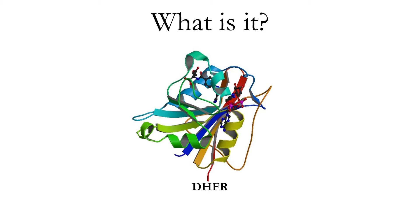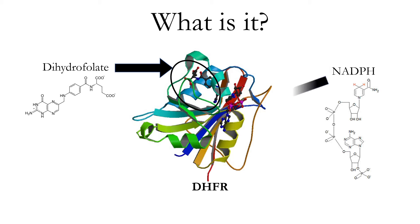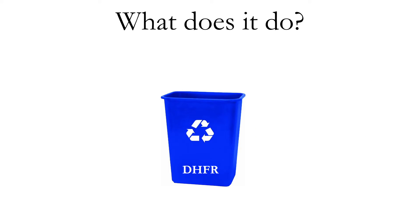Dihydrofolate reductase binds to two biological substrates. Not surprisingly, one of these substrates is dihydrofolate. The other substrate DHFR binds is NADPH. You can think of DHFR like a little biological recycling bin. It takes a molecule that's produced during biological processes that the cells don't want and recycles it into a usable molecule.